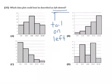So, let's look at choice A. Choice A has a nice symmetrical curve. It's the highest in the middle, and it goes down on both sides. So, this is what we call symmetrical.